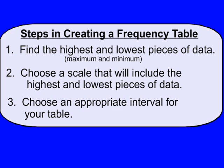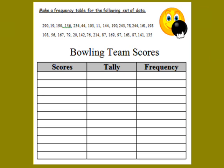These are the steps in creating a frequency table — you can refer back to this if you want. Let's go ahead and create some frequency tables. Here we have some bowling scores. The first thing you want to do is find the lowest and the highest piece of data. The highest bowling score is 290 and the lowest bowling score is 11.